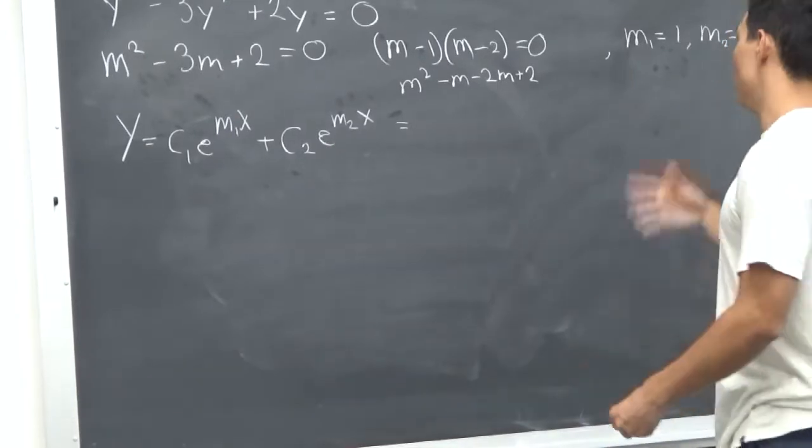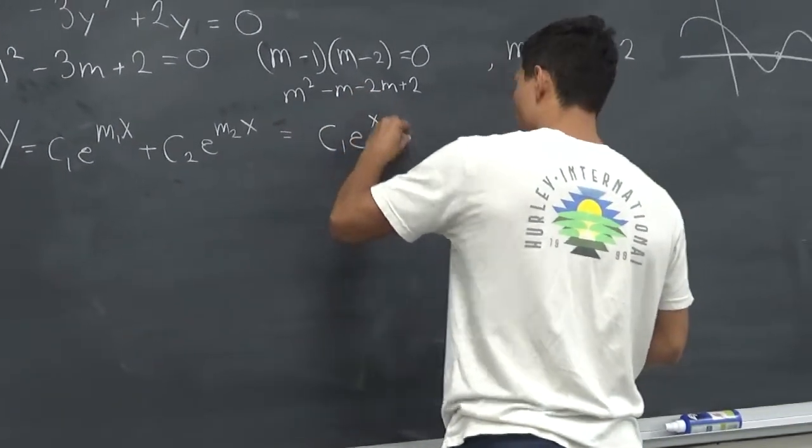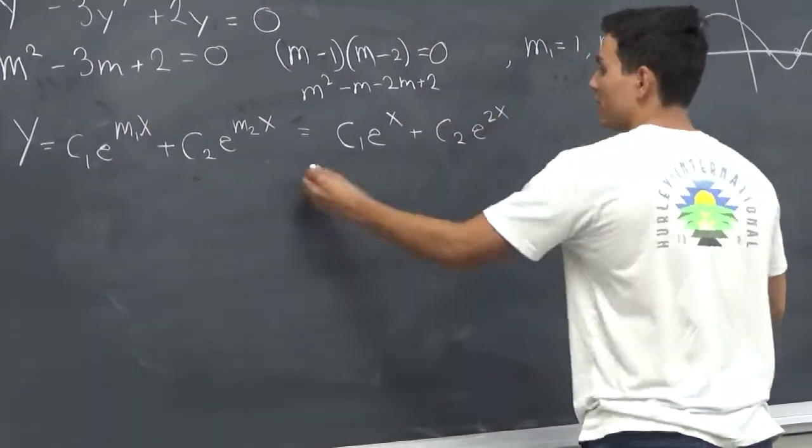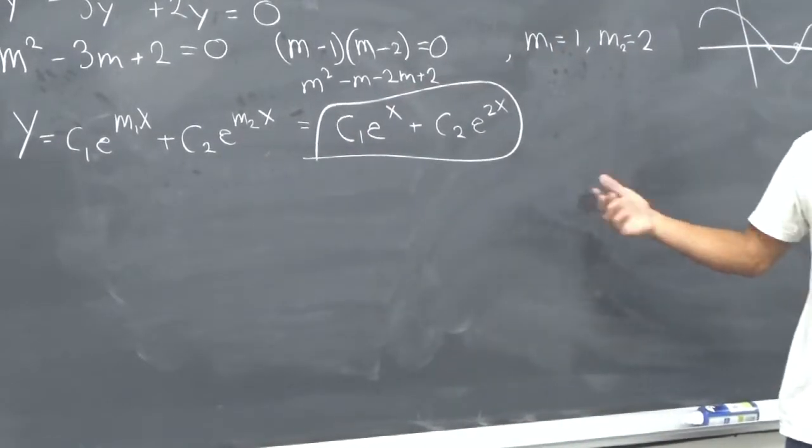So it would be C1 e to the x plus C2 e to the 2x. This is our answer right here, but you want to learn how to check your answer, so let's check it.